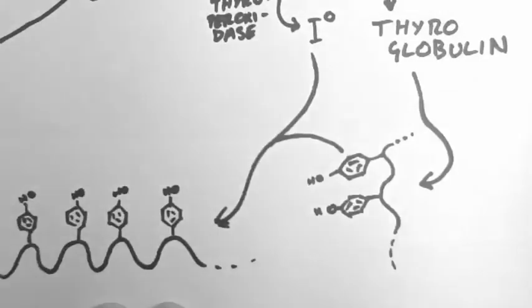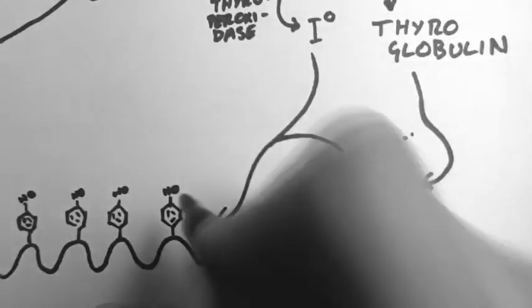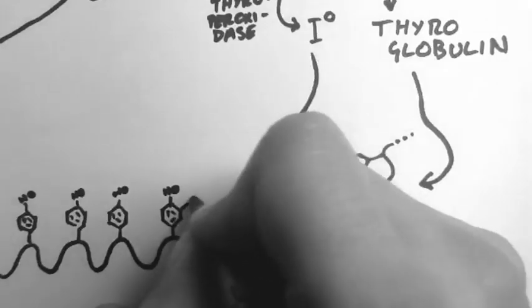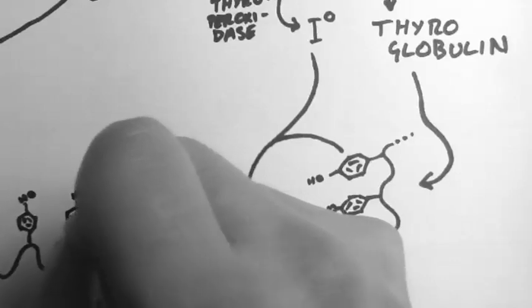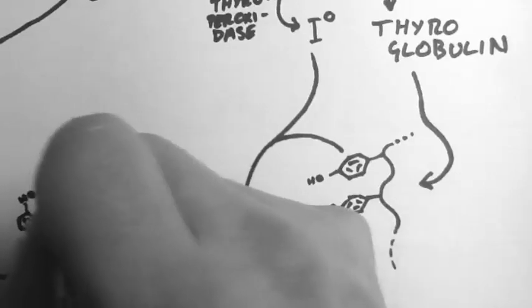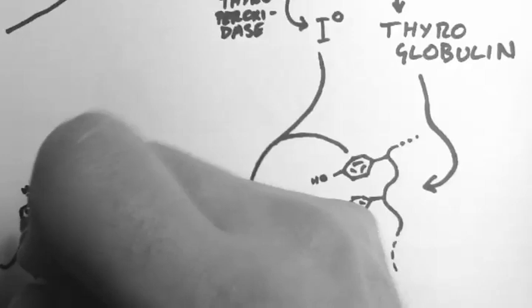The iodine can attach to just one spot, like this, or it can attach to two spots. So you can have either one iodine or two iodine on each of these tyrosine rings.